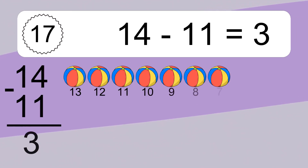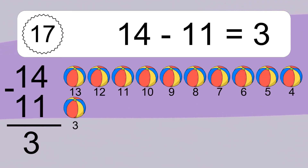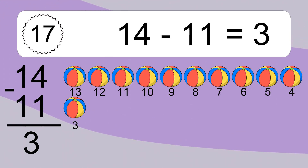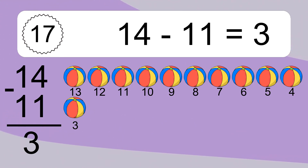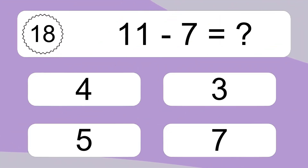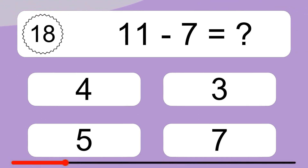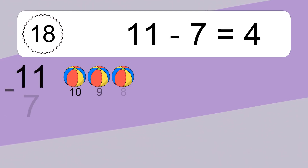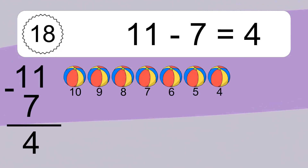14 minus 11 equals what? 14 minus 11 equals 3. Let's count it. 13, 12, 11, 10, 9, 8, 7, 6, 5, 4, 3.